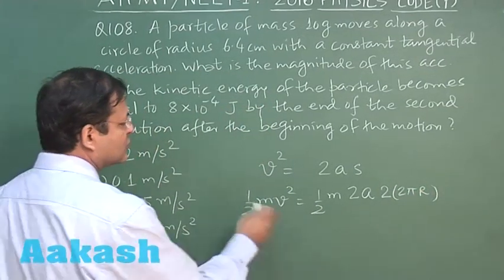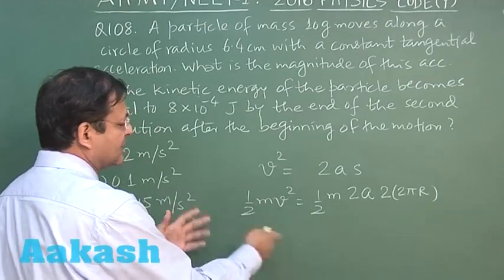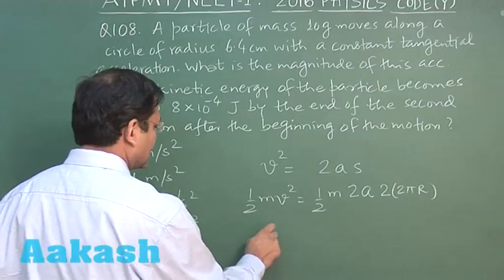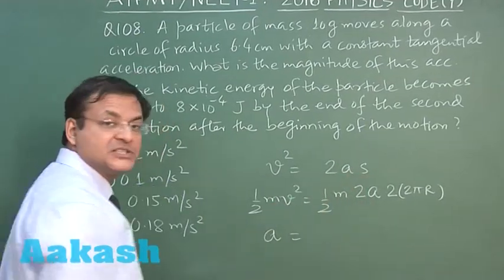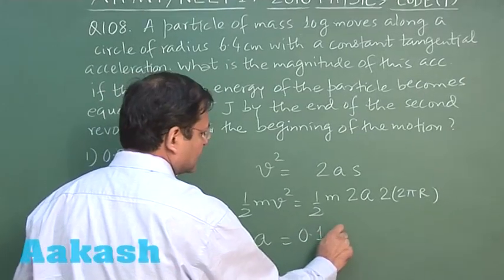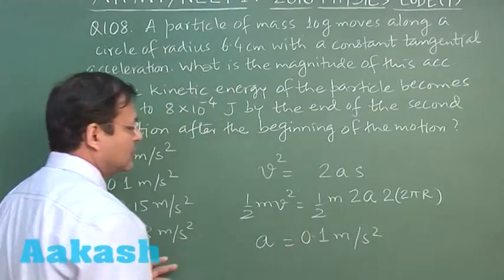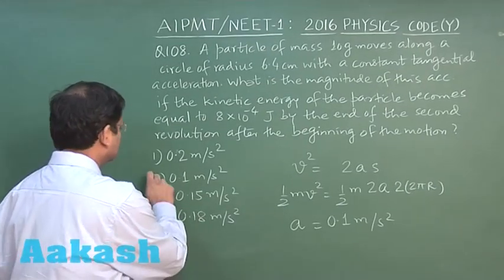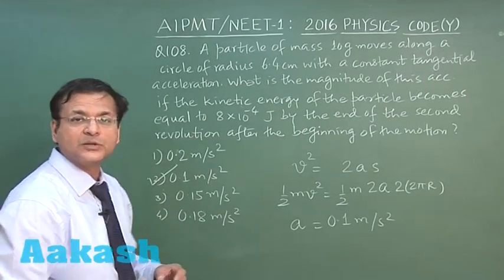Substitute the values of m, v, whatever total kinetic energy has been given, mass has been given. You can calculate the value of acceleration a. This is the tangential acceleration. It comes out to be 0.1 meter per second square. For this question I will be marking answer 2 and that is the answer to question 108.